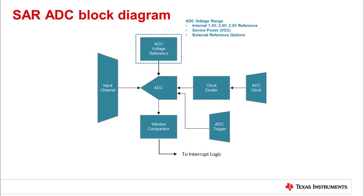The ADC voltage range can be configured with the internal reference voltages of 1.5 volts, 2 volts, or 2.5 volts. You can also configure it with the device power rail or VCC rail, and you also have the option to use an external reference if you choose.